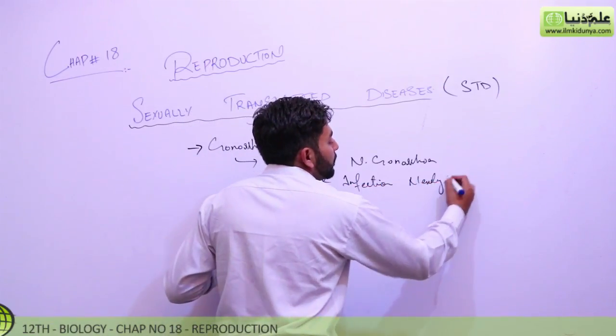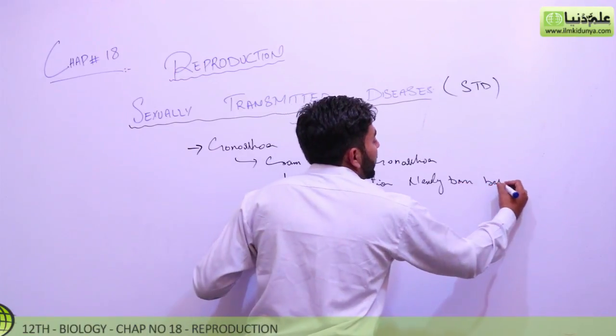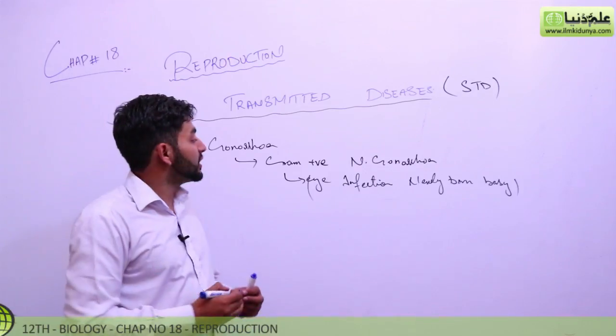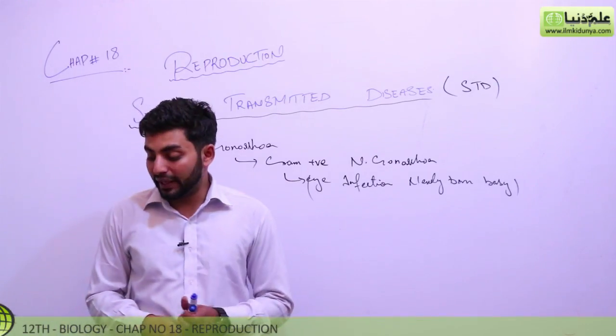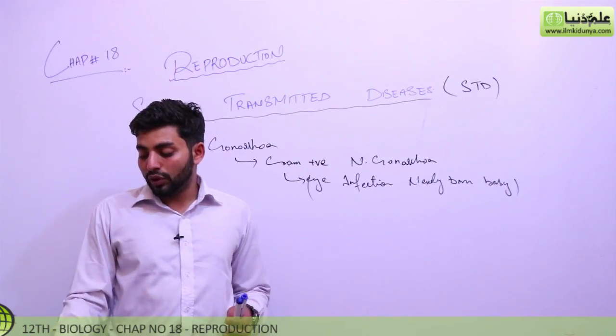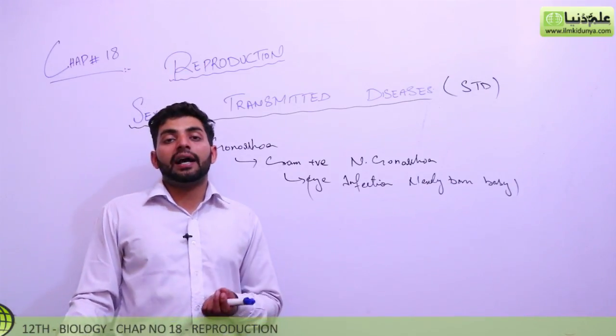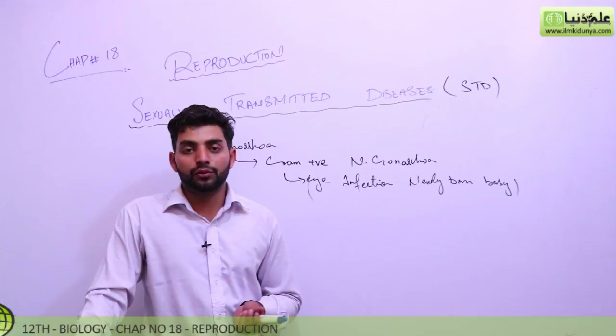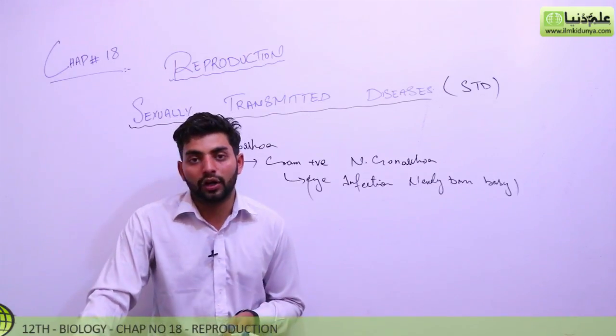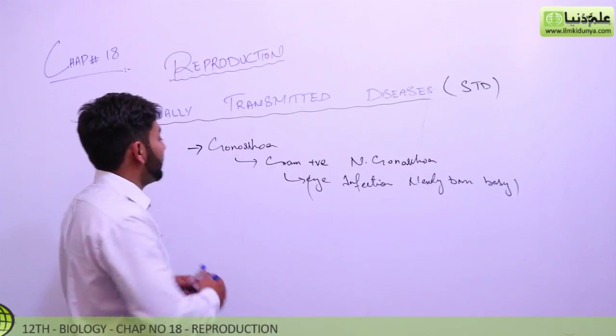Eye infection will be possible in the newly born baby. This problem is possible from the gram positive N. gonorrhea bacterium. If the birth canal has gonorrhea and it passes to the baby, this problem will be possible. This is highly contagious through sexual contact. This is syphilis.